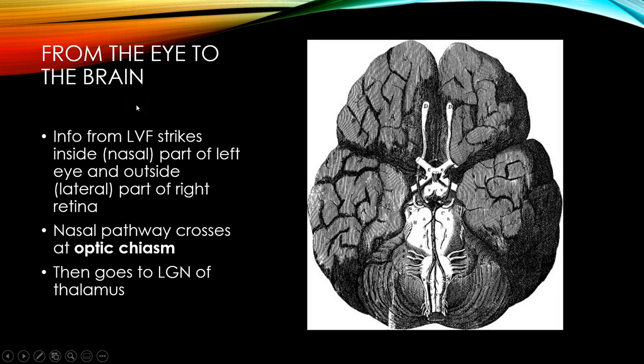When we're seeing something, information from the left visual field — think about your nose as the center point of your visual field — everything to the left strikes the inside part of your left eye and the outside or the lateral part of your right eye. Information from the left visual field hits both of your eyes, because if you close one eye, you still see most of the visual field.